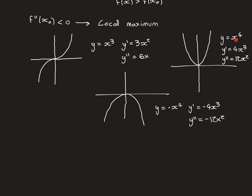Similarly, take y = −x⁴, whose graph is an inverted version of x⁴. Its derivative is −4x³ and its second derivative is −12x². The function has a stationary point at x = 0, the derivative is 0 there, and the second derivative is also 0. Yet this stationary point is a global maximum. So we now have three cases where f″ = 0: a stationary point that is neither max nor min, one that is a global minimum, and one that is a global maximum.